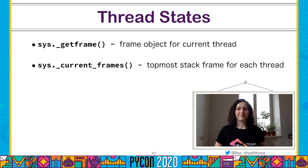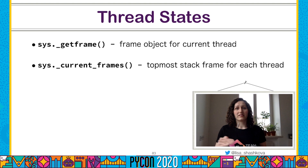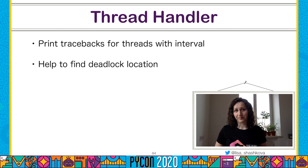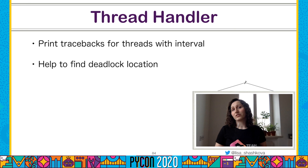We've already used sys.getframe(), which returns a frame object for the current thread. But there is also another useful function, sys._current_frames(), which returns the topmost stack frame for every thread in the current Python process. And the coolest thing about this function is that it works even with deadlocked threads. With it, we can create a tool that prints tracebacks for threads at a given interval, helping us find the place where threads are stuck in a deadlock.